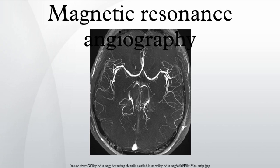Time-of-flight, or in-flow angiography, uses a short echo time and flow compensation to make flowing blood much brighter than stationary tissue. As flowing blood enters the area being imaged, it has seen a limited number of excitation pulses so it is not saturated, giving it a much higher signal than the saturated stationary tissue. As this method is dependent on flowing blood, areas with slow flow or flow that is in-plane of the image may not be well visualized. This is most commonly used in the head and neck and gives detailed high-resolution images.